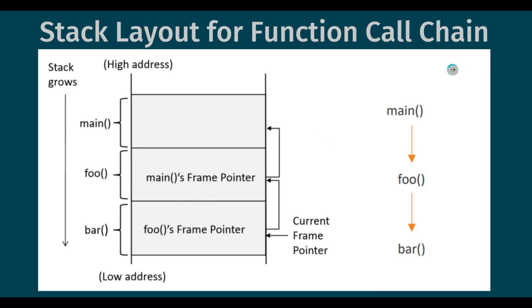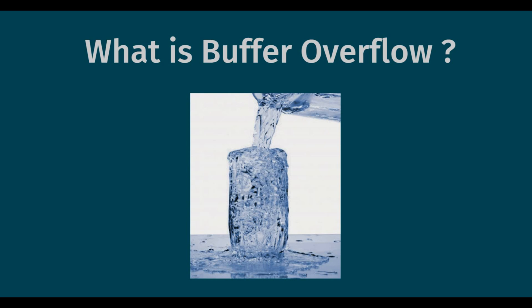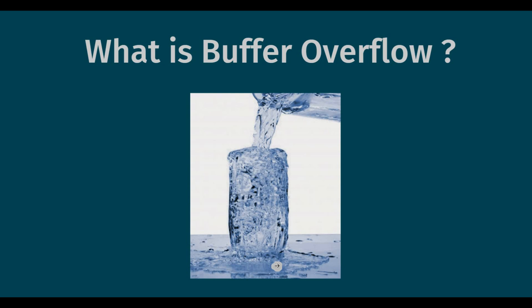We discussed how memory will be allocated for the process and how the stack layout will be for a function call. Now let's get into what buffer overflow is and how it happens. Basically, if we try to put data into a buffer more than the buffer can hold, then there will be an overflow. As shown in the picture, if you try to pour water into a glass more than the glass can hold, there will be overflow. In technical terms, if there is a buffer of length x, and we try to copy data of length greater than x into that buffer, then there will be a buffer overflow.